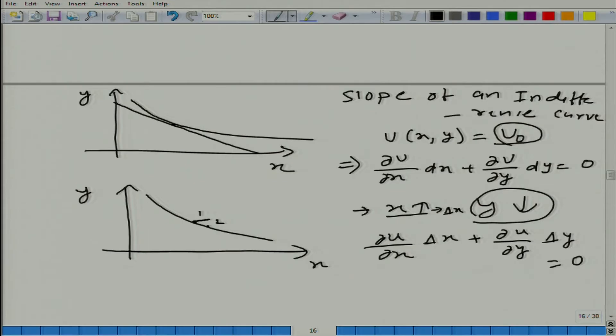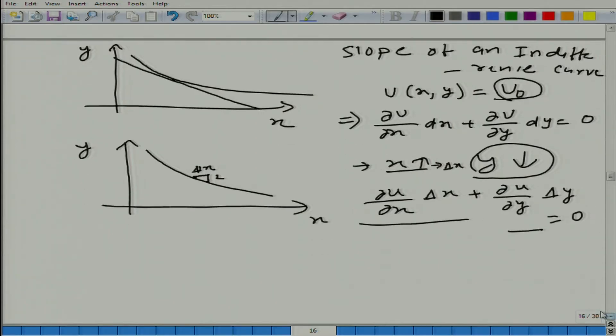So, when I move from here to here by increasing Δx, utility goes up. And to bring him back, what we have to do is decrease y by Δy amount. So, these are the changes and this is equal to 0. What would be the slope? Let us say this is the slope at this point. The slope Δy/Δx is the slope.